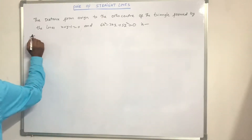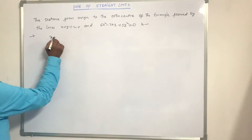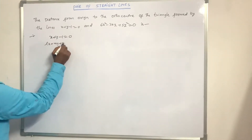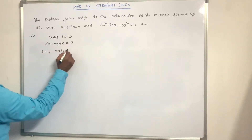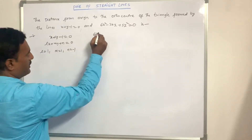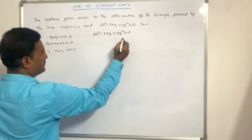Find the distance from the origin to the orthocenter of the triangle formed by the lines x + y minus 1 = 0 and 6x² minus 3xy + 5y² = 0. The line x + y minus 1 = 0 is in the form Lx + My + N = 0, giving L = 1, M = 1, and N = minus 1.